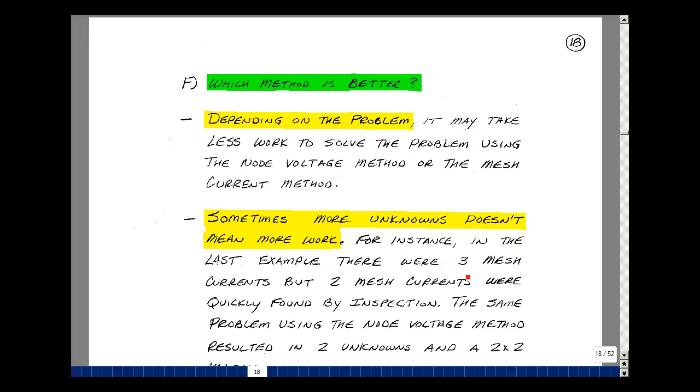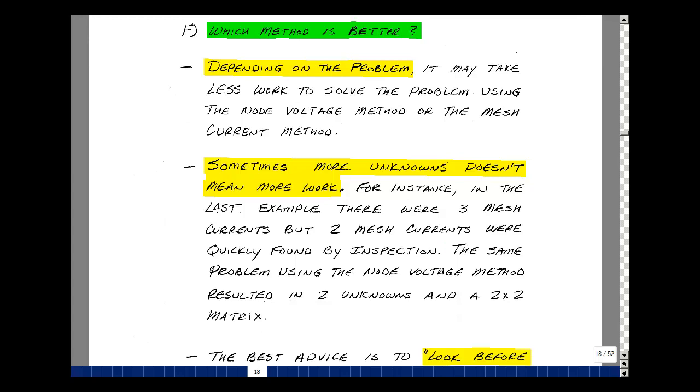Sometimes more unknowns doesn't mean more work. So in this last example, we had three mesh currents, but two of them were known. So there was only one unknown. We did the same problem with node equations, and we had a 2x2 matrix.